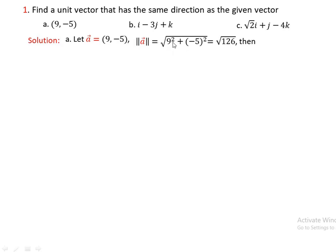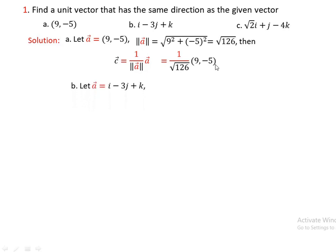Now the norm of vector a = ⟨9, -5⟩ is the square root of 9² + (-5)², which is the square root of 81 plus 25, equal to the square root of 106. Wait — 81 plus 45 equals 126, so norm of a is square root of 126. Applying the formula, the unit vector c is 1 over square root of 126 times vector a = ⟨9, -5⟩.